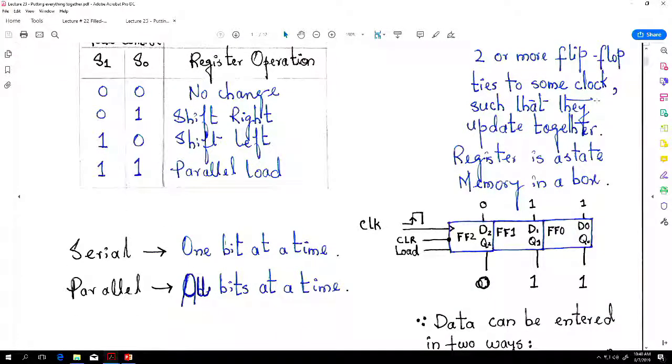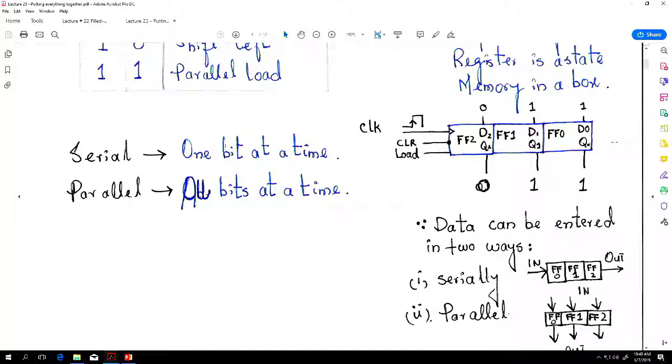We do understand what serial and parallel means now. Serial would mean it takes one bit at a time every time the clock arrives, whereas the parallel it takes all of the data at one time.